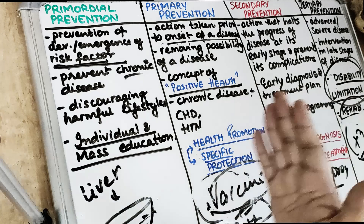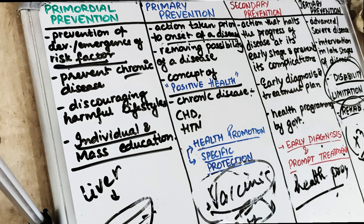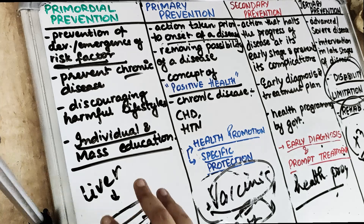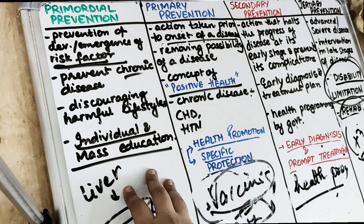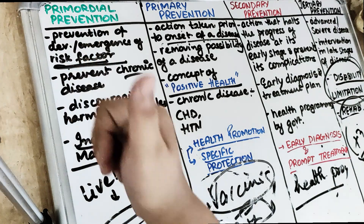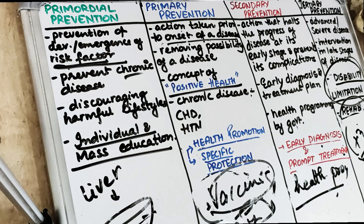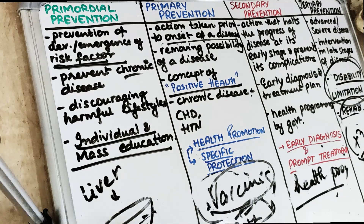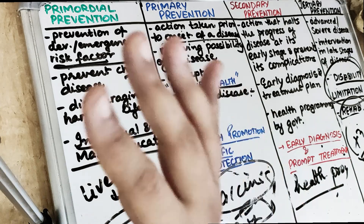These are the levels of prevention — primordial, primary, secondary, and tertiary — done at different stages of disease. I hope you guys enjoyed the video and your concepts are clear with the levels of prevention. If you enjoyed the video, hit the like button and comment below. Subscribe to the channel to get free videos like this, and you can also support us on Paytm or PayPal. Keep reading, keep learning, and stay safe. I will see you guys in the next video.